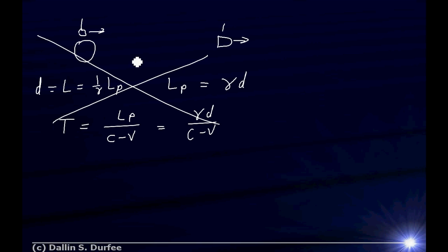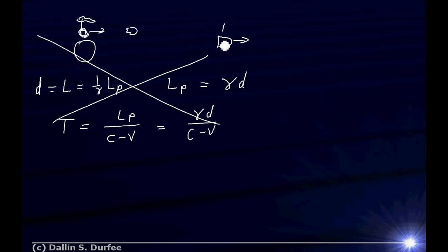The reason it's wrong is subtle: yes, the probe measures the proper length from the asteroid to itself, and the Earth measures a length-contracted version. But time is relative. If the probe sees this asteroid being right next to the Earth when it sends its message, the Earth doesn't see the asteroid right there at the same moment. The asteroid is somewhere else in the Earth's frame when the probe sends its signal. So the distance you'd length-contract is not actually D. This is what makes relativity tricky — and this is why Lorentz transformations are so useful.